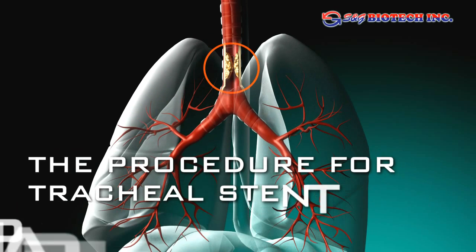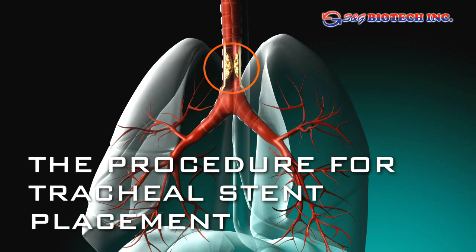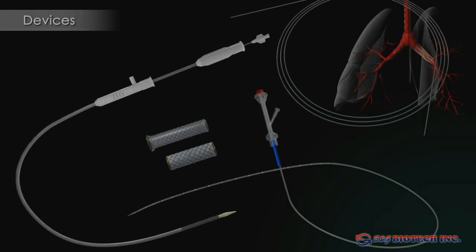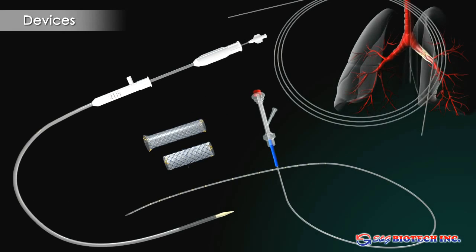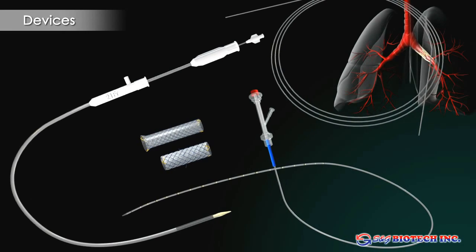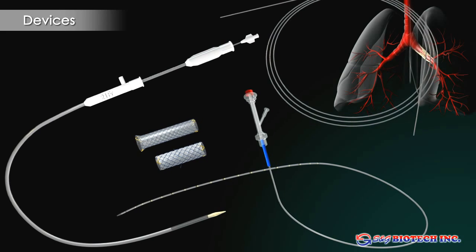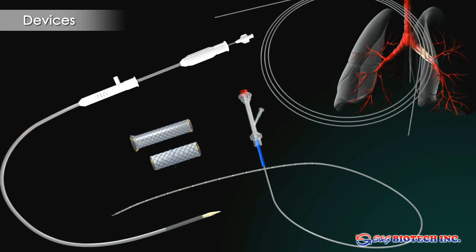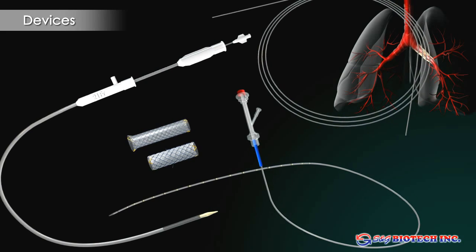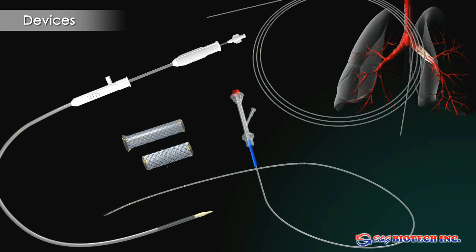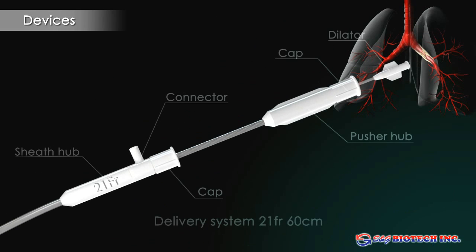The procedure for tracheal stent placement. The purpose of airway stenting is to relieve airway obstruction caused by strictures unsuitable for resection or oncological treatment.